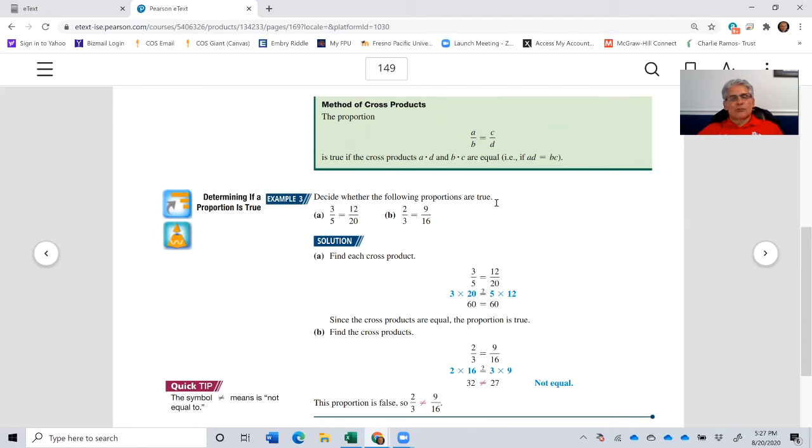So decide whether the following proportions are true. All we have to do is cross multiply, and if we come up with similar numbers, then it is true. So first, 3 fifths is equal to 12 twentieths, or 3 to 5 is equal to 12 to 20. If we solve for the cross multiplication, 3 times 20 is 60, and then 5 times 12 is also 60. So 60 equals 60. That is a true statement. This proportion is true.